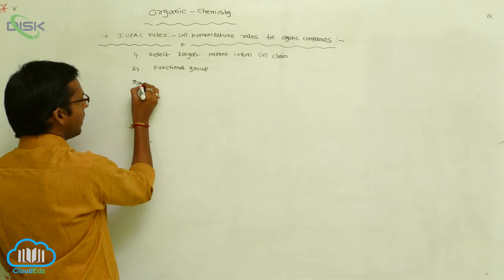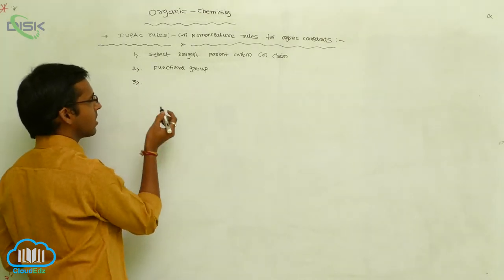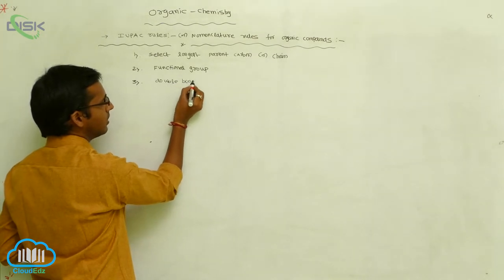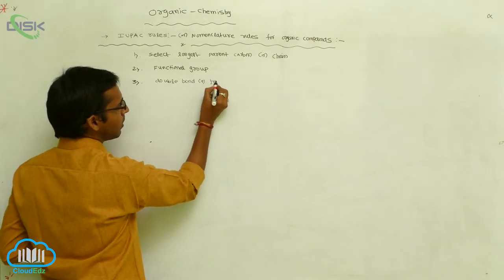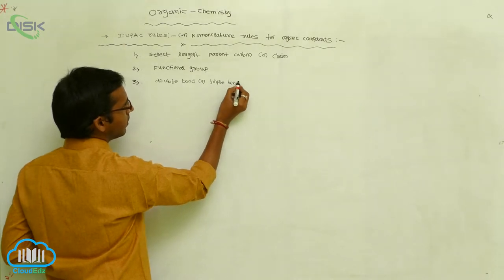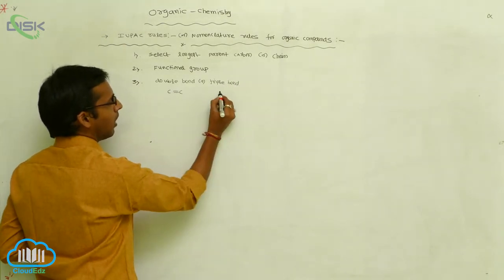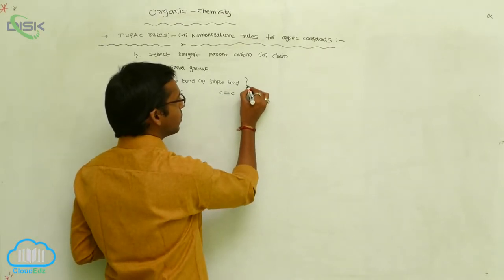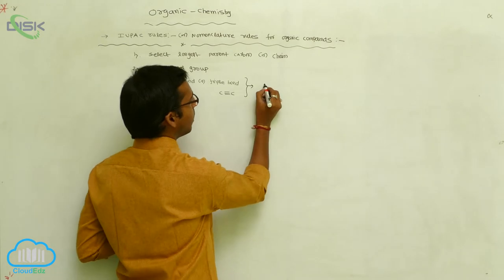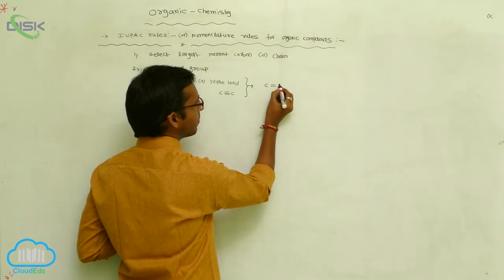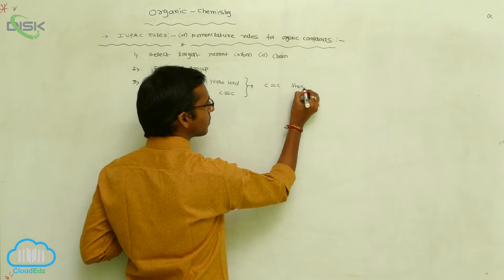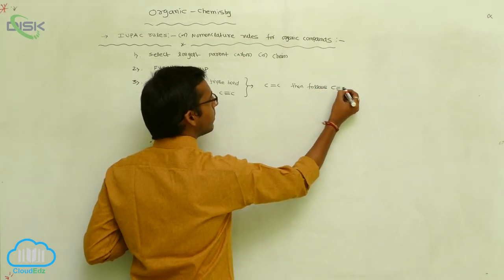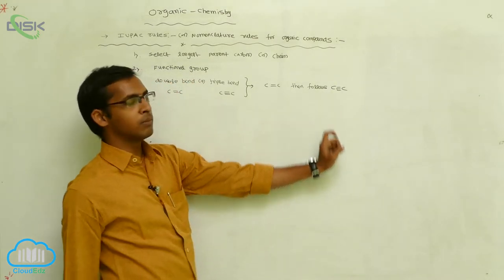Next, regarding saturation and unsaturation: if a double bond or triple bond is present between carbons, give the first (lowest) numbering to the double bond, then follow with the triple bond. This means the double bond gets a lower number compared to the triple bond.